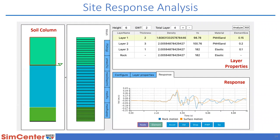Another way to specify ground motions in EEUQ is site response analysis. This is also available as a standalone tool called SHARK, which will be covered in detail in part 3 tomorrow. The tool allows you to define different soil layers, specify their properties, and propagate ground motions from the bottom of the soil column up to the level of the building, producing ground motions you then apply to the building model.